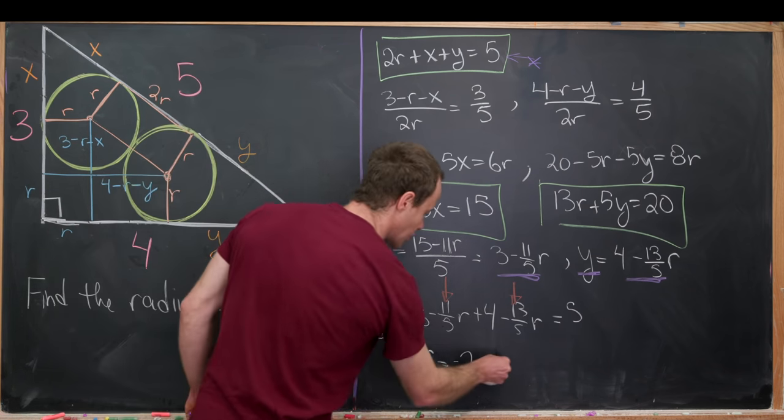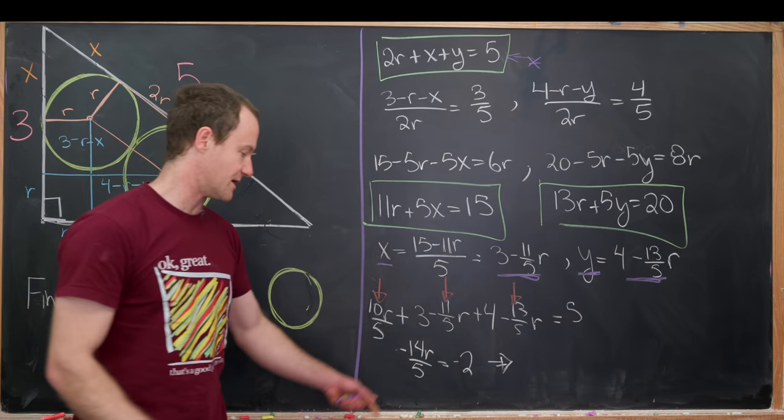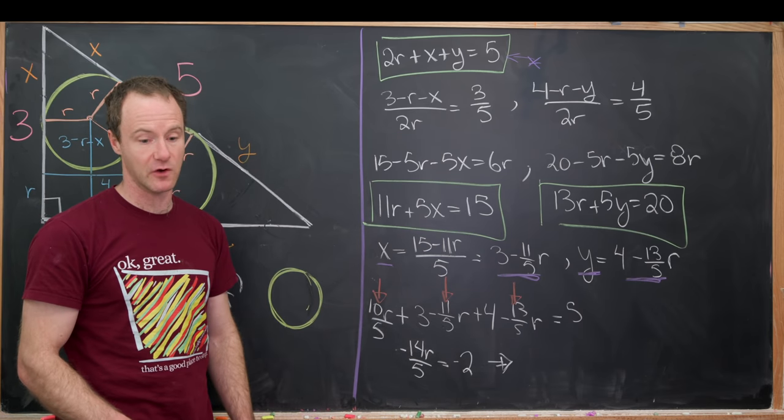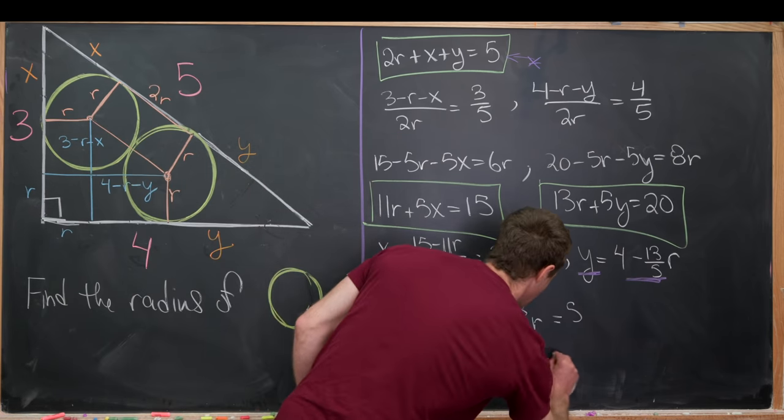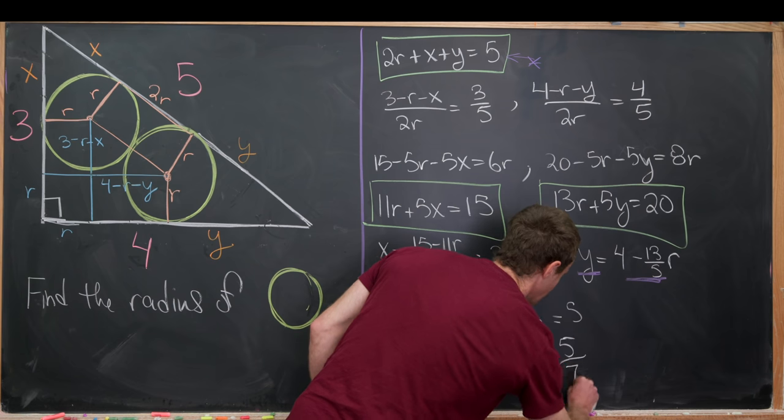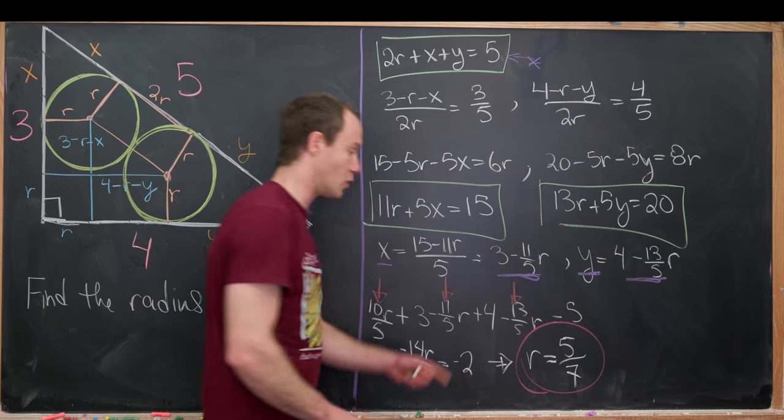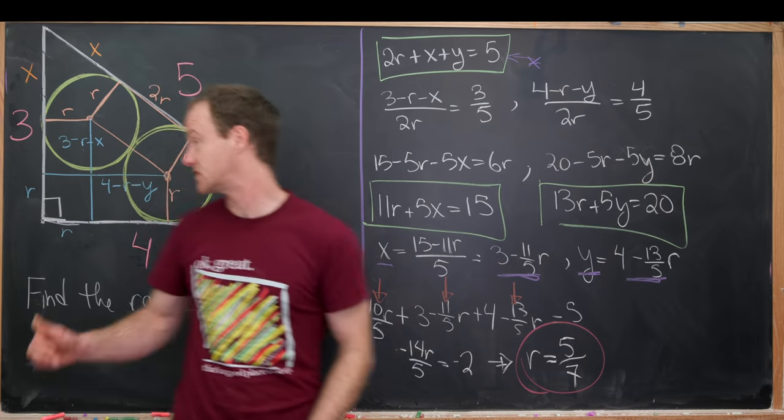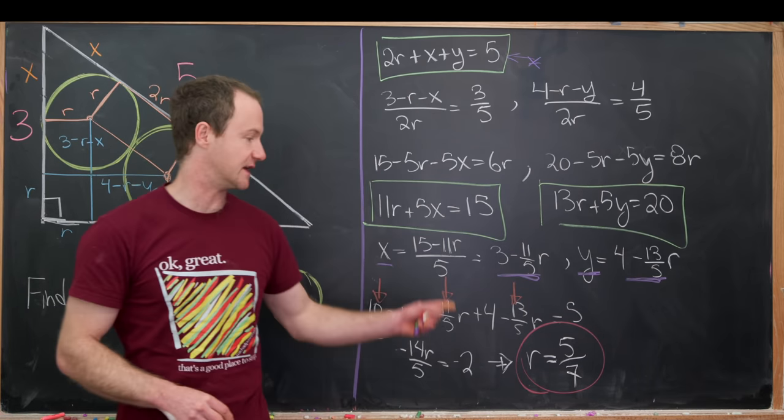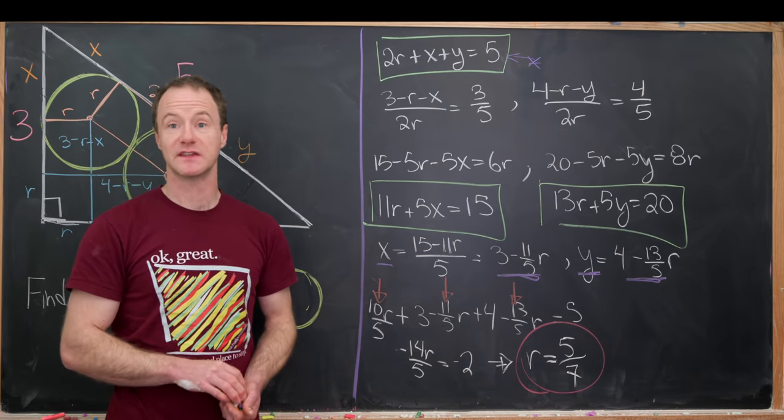But now we're pretty much home free. We can multiply both sides by negative 5 over 14. And we'll see that r is equal to 5 over 7. But that was our final goal. Our goal was to find the radius of these circles. And that's exactly what we've done. It's 5 over 7. And that's a good place to stop.